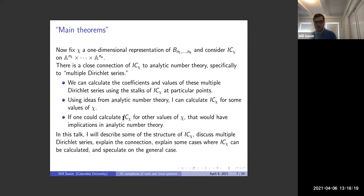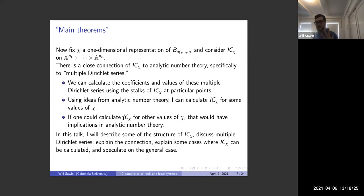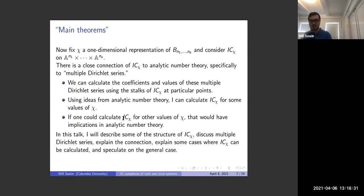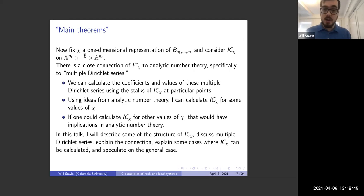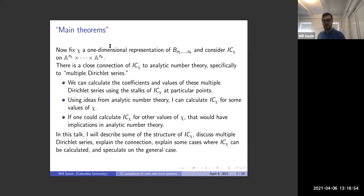Now I'm going to state the main theorem somewhat informally. I want to fix χ, a one-dimensional character of this colored braid group, and consider the IC complex of the character χ as a sheaf — or complex of sheaves — on A^{n_1} × A^{n_2} × ⋯ × A^{n_k}.